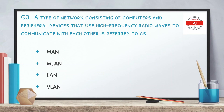Question 3: a type of network consisting of computers and peripheral devices that use high-frequency radio waves to communicate with each other is referred to as — MAN, wireless LAN, LAN, or VLAN. The correct answer is wireless LAN.